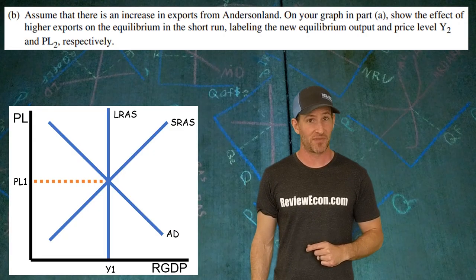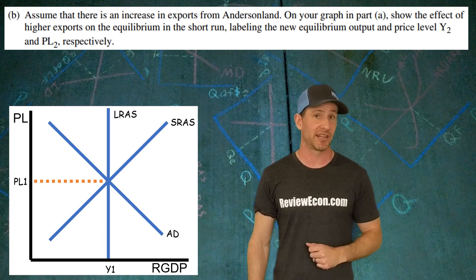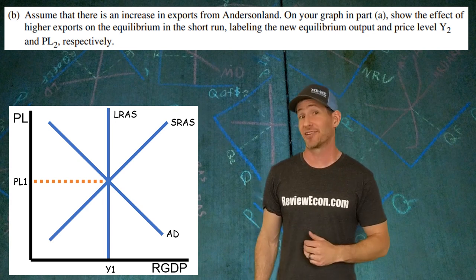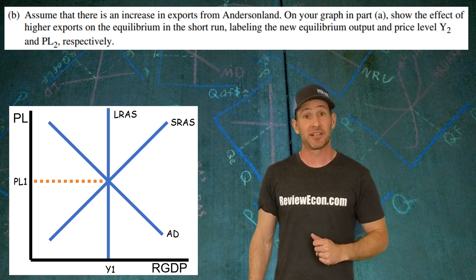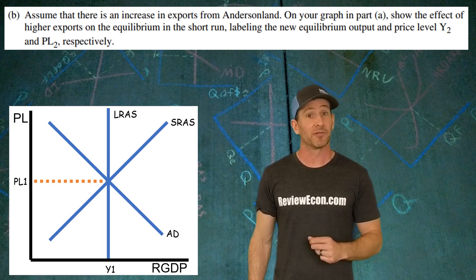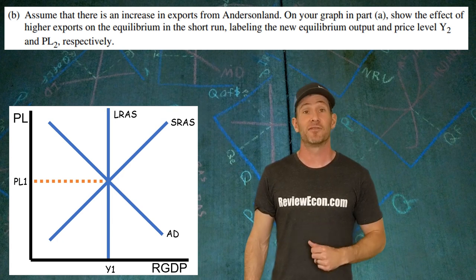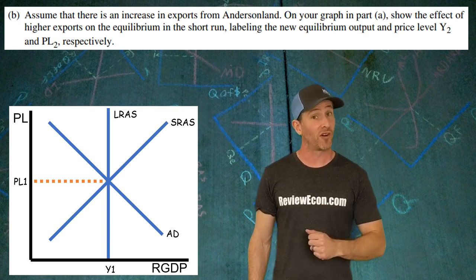Part B has assumed that Anderson Land is experiencing an increase in exports. We have to show that change on the aggregate demand aggregate supply model here. An increase in exports is going to shift that aggregate demand curve. The reason why is because aggregate demand shifters are anything that is part of the output expenditure model of the formula for GDP.